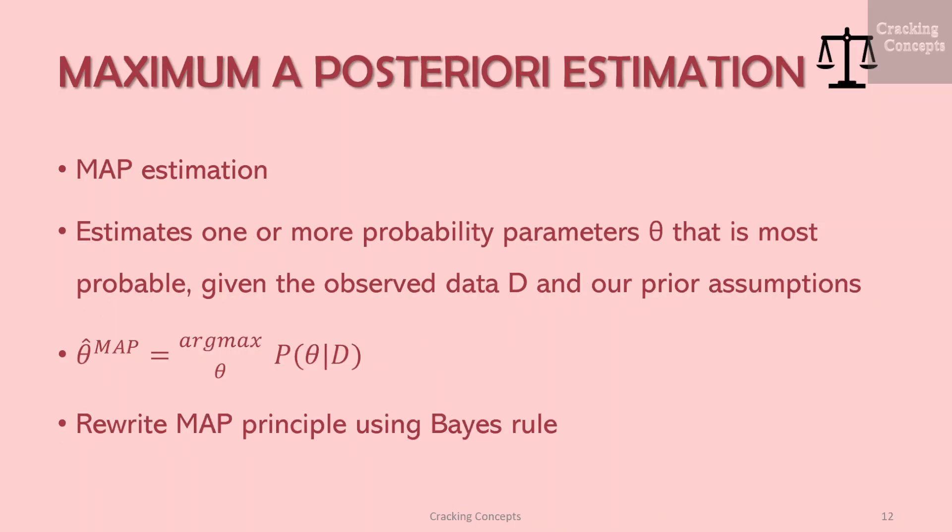Now we will look into maximum a posteriori estimation, often abbreviated to MAP estimation. It estimates probability parameters θ based on the principle that we should choose the value of θ that is most probable given the observed data d and our prior assumptions summarized by P(θ). So θ̂_MAP is given by argmax of P(θ|d), meaning it takes the value of θ that maximizes P(θ|d).